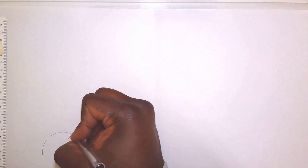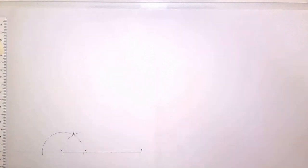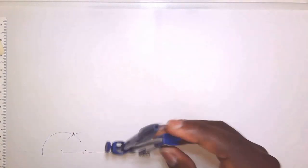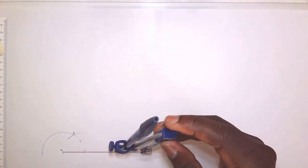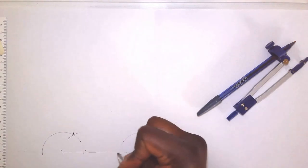I'm going to call this intersection point two. I'm going to do likewise on the opposite side. Standing at B, scribe an arc. Where it cuts the line, I'm going to call that point three.